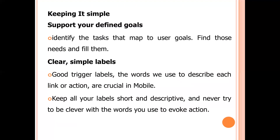Keeping it simple means you need to support your defined goals, identify the tasks that map to user goals, find those needs and fill them, and use clear and simple labels. Good trigger labels are important — the words used to describe each link or action are crucial in mobile. Keep all your labels short and descriptive, and never try to be clever with the words you use to evoke action.